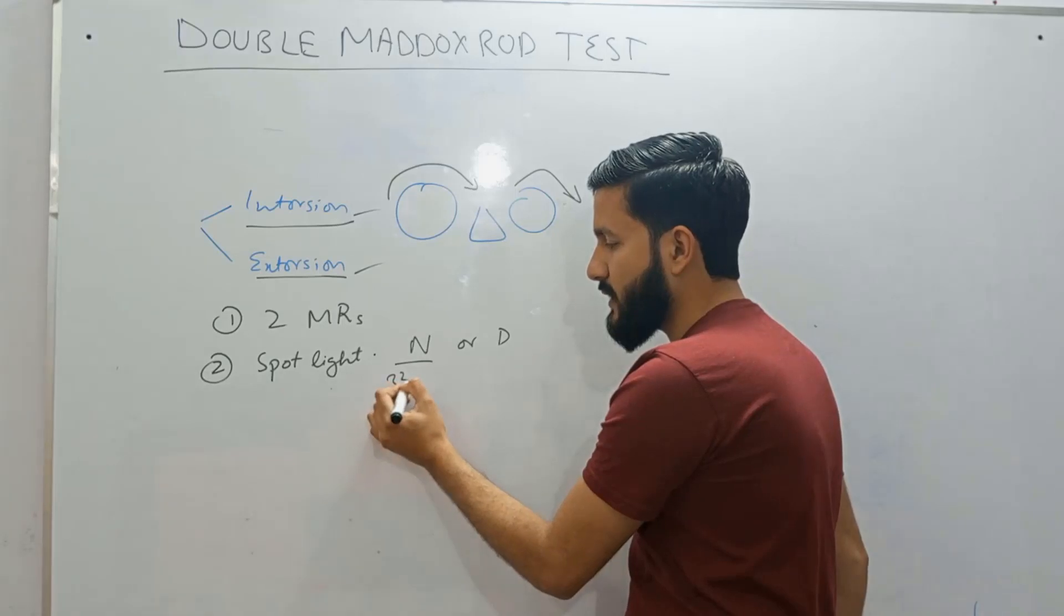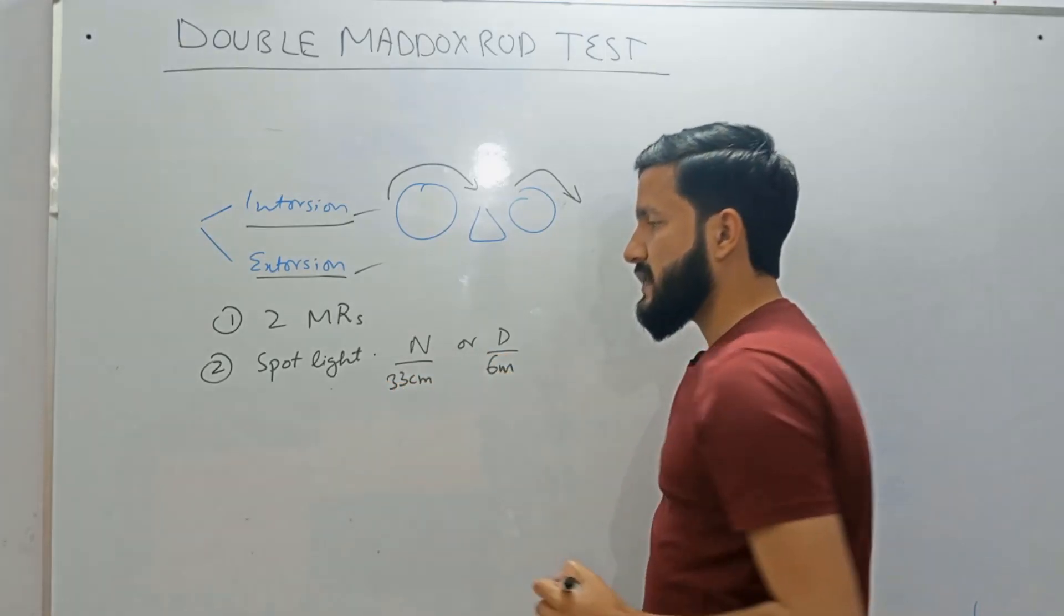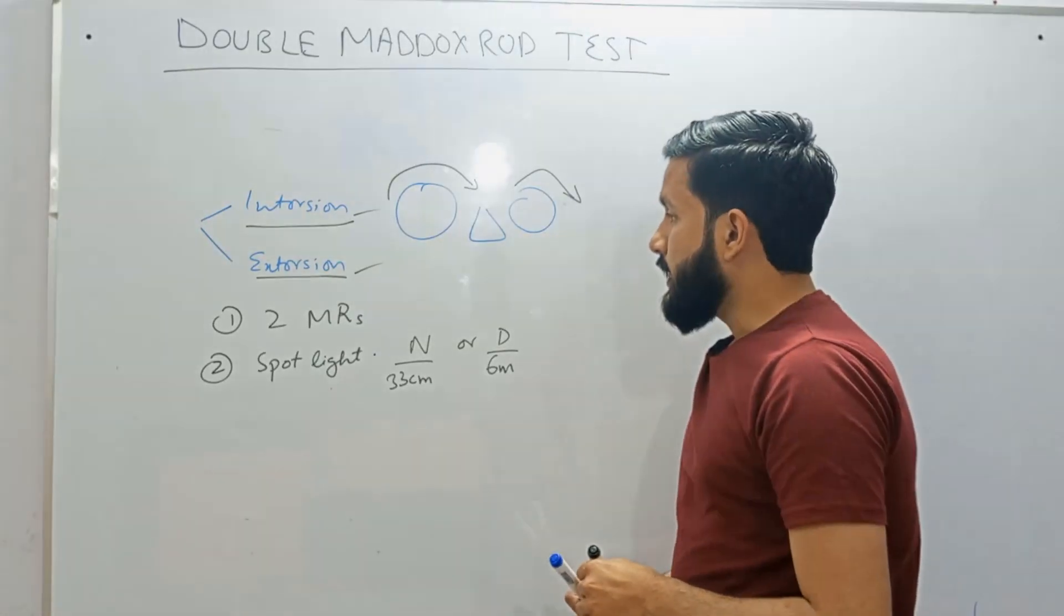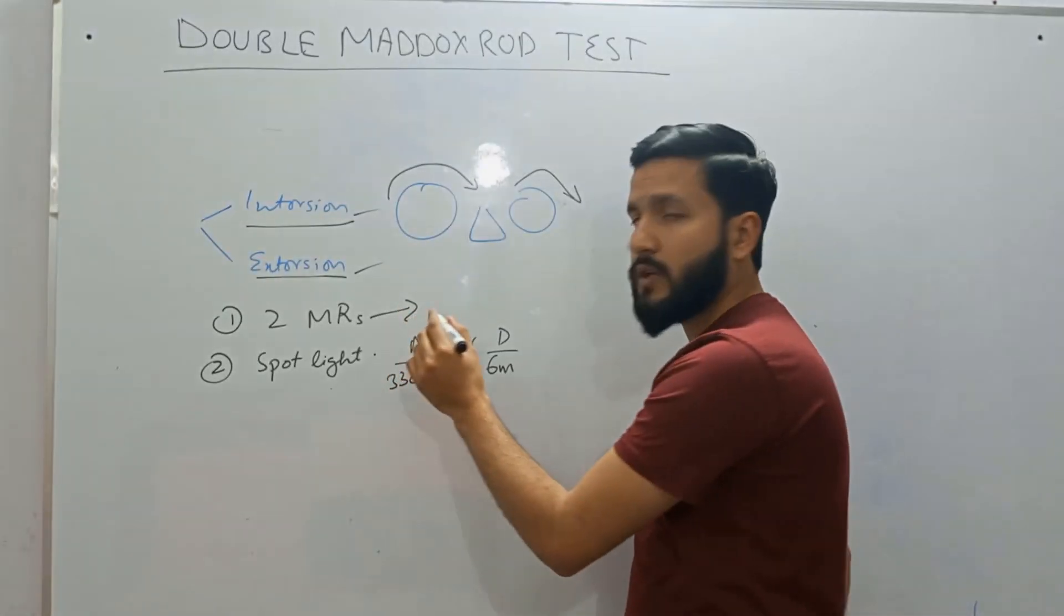For near the distance is 33 centimeters and for distance the distance is 6 meters and you have to place both these Maddox rods vertically.